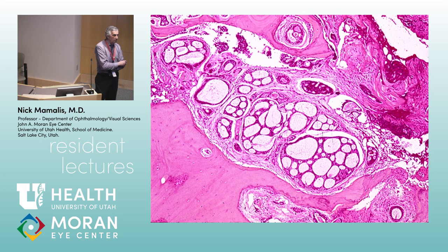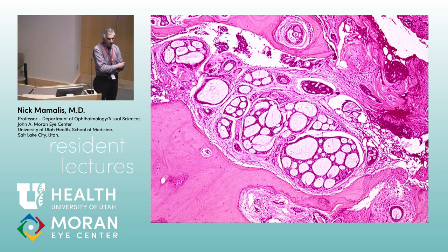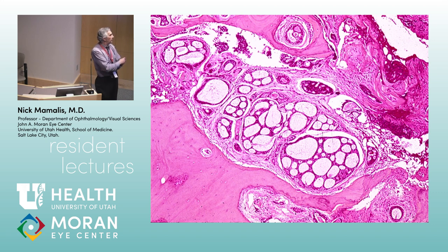Adenoid cystic carcinomas are described as 'disarmingly benign' — when you look at the actual cells, they just don't look malignant. Usually in malignancy cells have nucleoli, mitotic figures, really nasty-looking features. But these cells almost look benign, and that's what's really difficult about this particular tumor — the cells themselves look benign but in reality they can be quite aggressive.